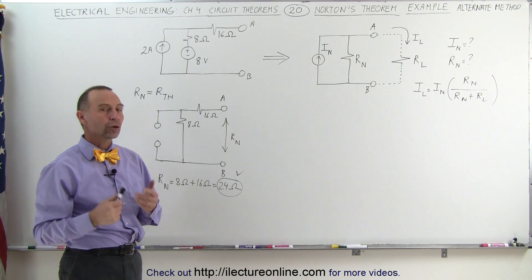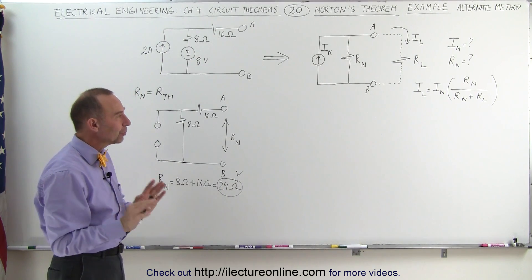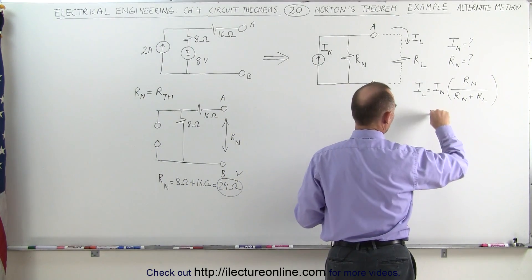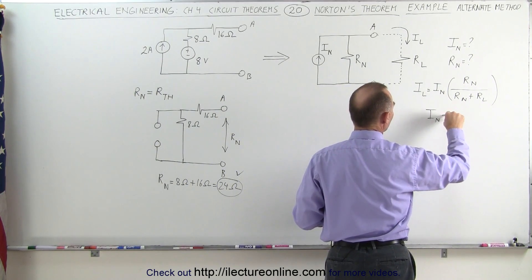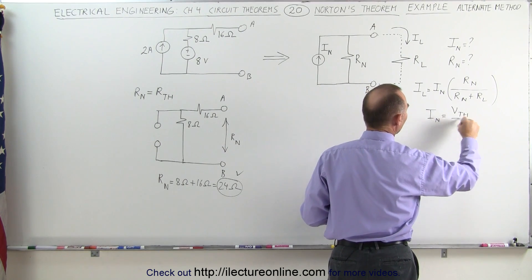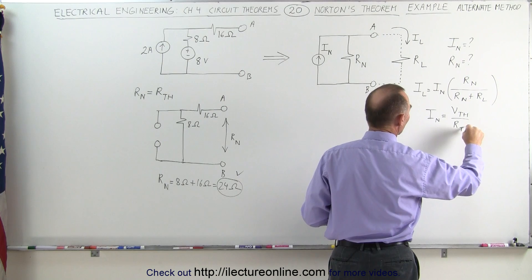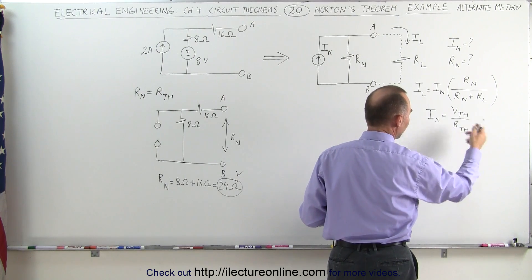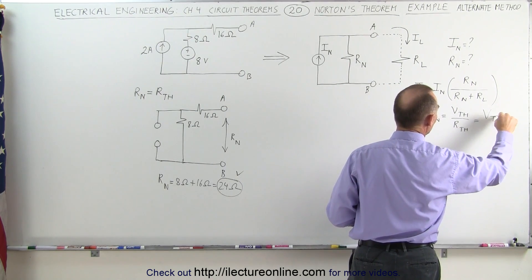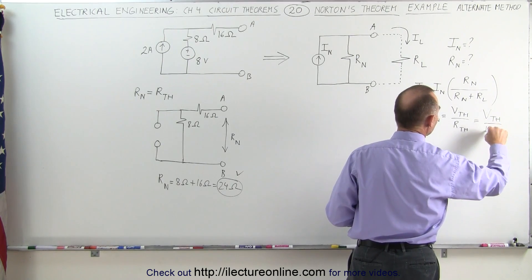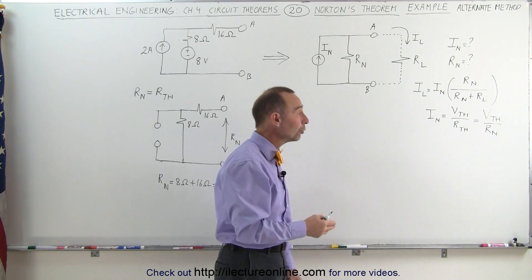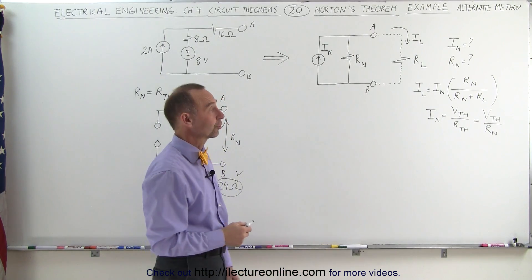To find the current, we can do that in a different way. We can say that the Norton current, I sub n, can be found by simply using Ohm's law, which is the Thevenin voltage divided by the Thevenin resistance. Remember that the Thevenin resistance is the same as Norton resistance, so this can be written as the Thevenin voltage divided by the Norton resistance. All we have to do is find the Thevenin voltage, and then we can find the Norton current.